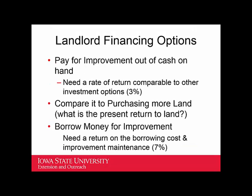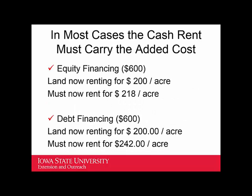Looking at the landlord financing the tile: maybe they think 3% would be a good rate of return on their own money, but if they have to borrow, maybe 7% is the return they need. That's one reason a lot of land has never been tiled — the cost of borrowing capital. For example, if you spent $600 on tile and land was renting for $200 an acre, at 3% you'd need $18 more per acre in rent; at 7% you'd need $42 more. The tenant may be willing to pay more rent long-term in exchange for better drainage.